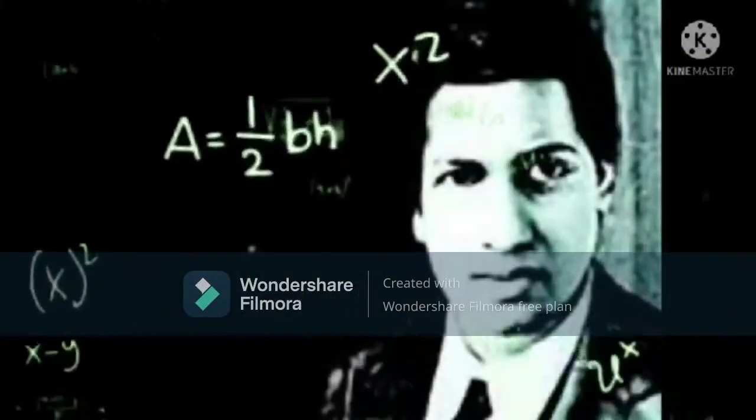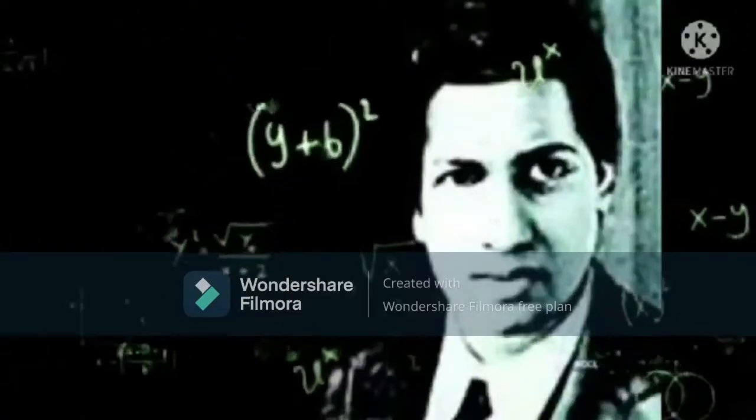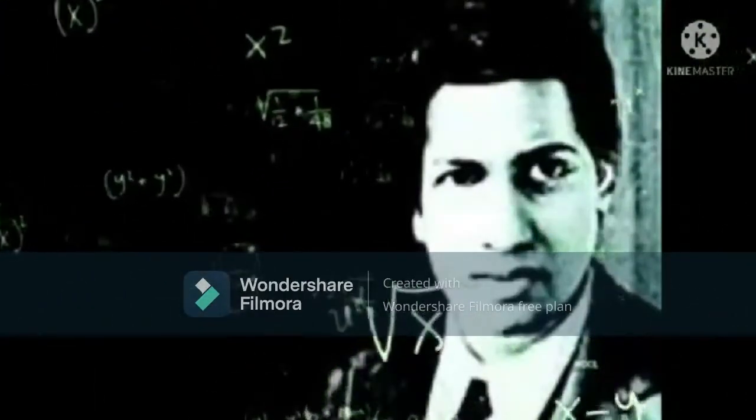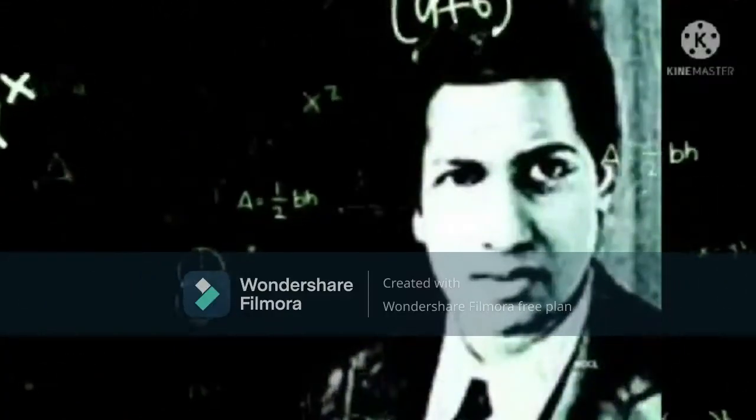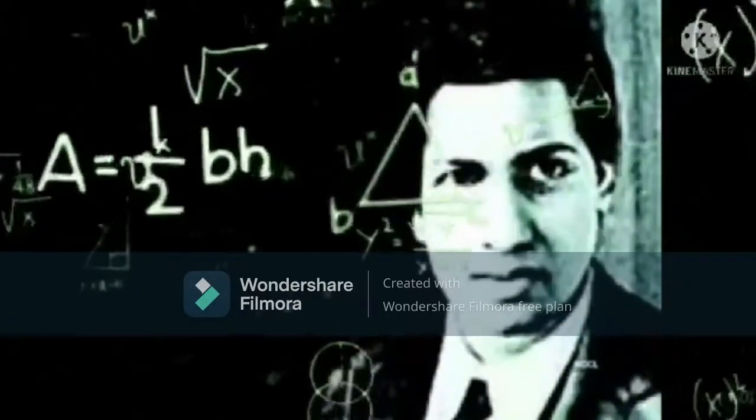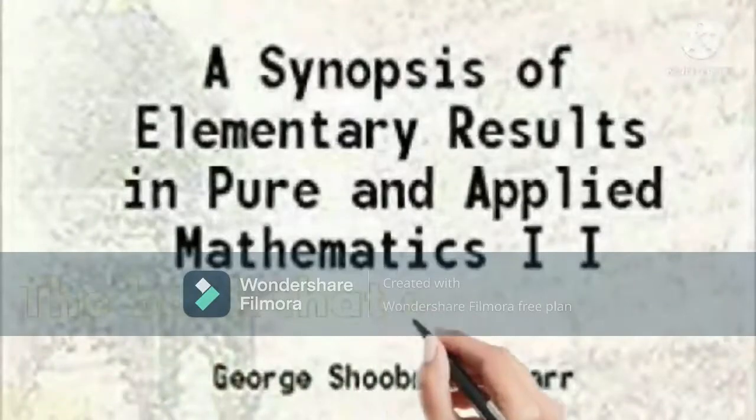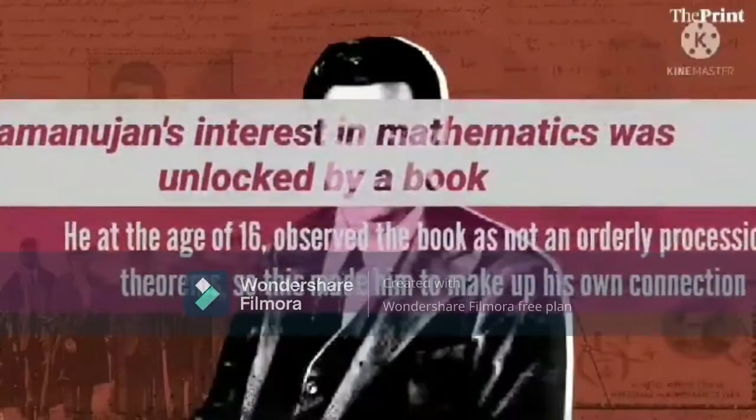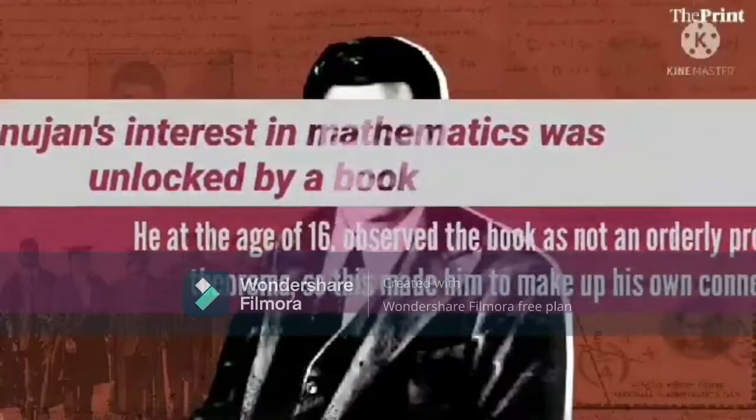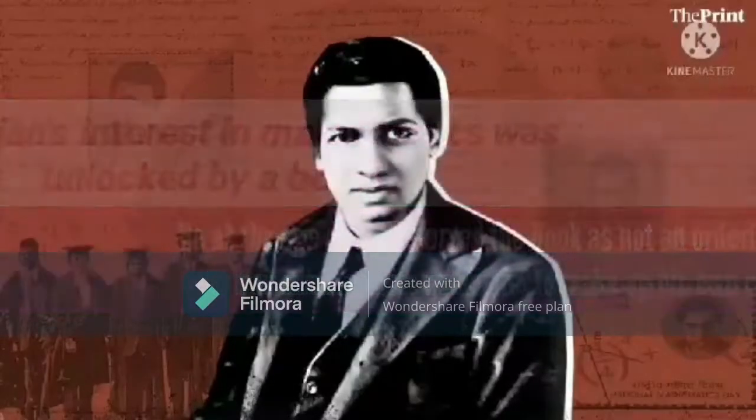He was a great mathematician born in the year 1887 on 22nd of December. At the age of 22, he married Janaki Ammal when she was 10 years old. Synopsis of Elementary Results in Pure and Applied Mathematics was the book that influenced Ramanujan to create his own proofs and theories in mathematics.